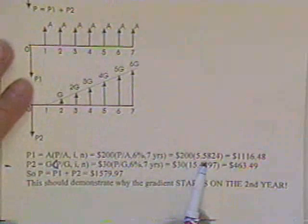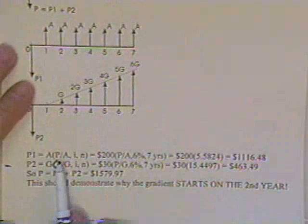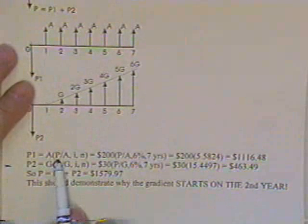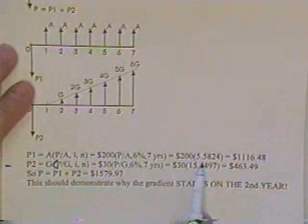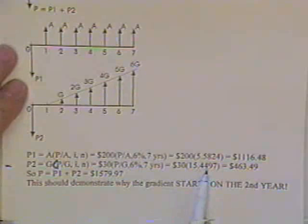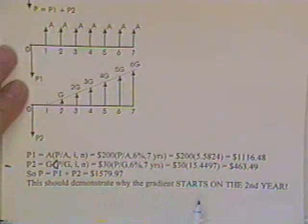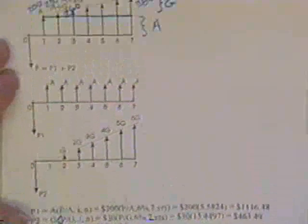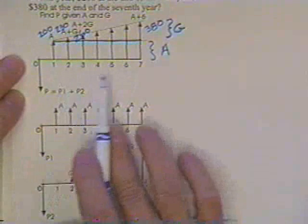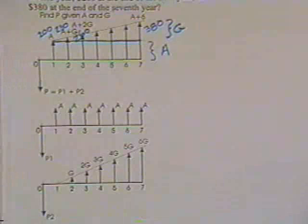Then, if you'll check the factors, you'll find that the factor needed to change an annuity into a present value would be 5.5824. To change a gradient into a present value is 15.4497, and you simply add them up. And that also should demonstrate why the gradient starts on the second year, because that really makes this kind of operation easy without moving that gradient around someplace else.